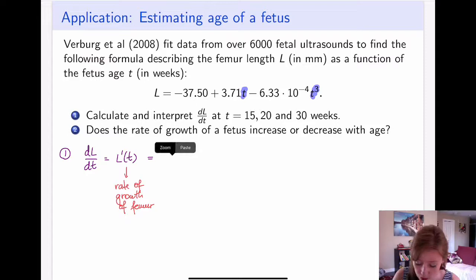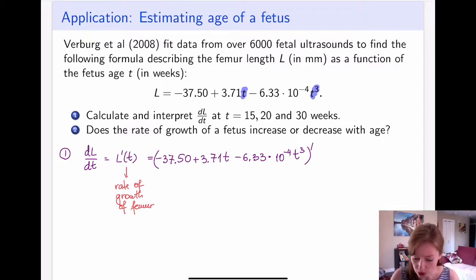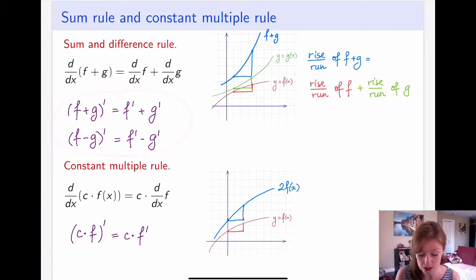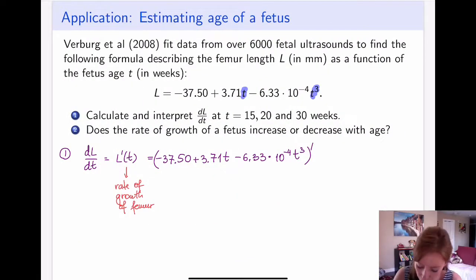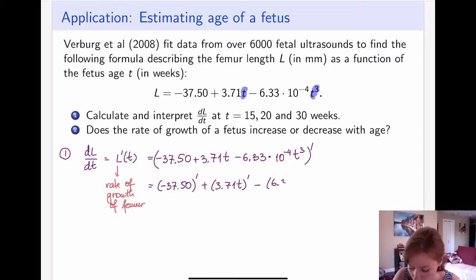I'm going to take the derivative of this slowly since it's the first example. First, I rewrite the entire function and take the derivative of the whole thing. The key observation is that it consists of three separate pieces with plus and minus in between, so the sum and difference rule lets me break this apart and take derivatives of the separate pieces. So this is the same as taking the derivative of the first piece, plus the derivative of the second piece, minus the derivative of the third piece.